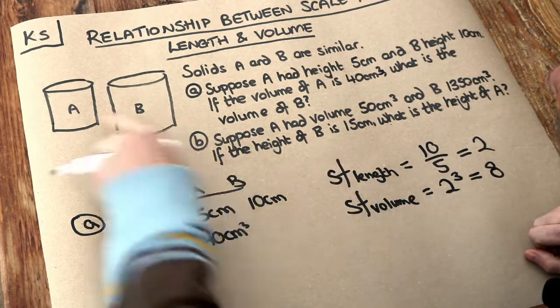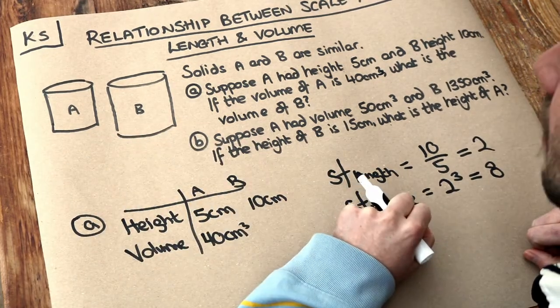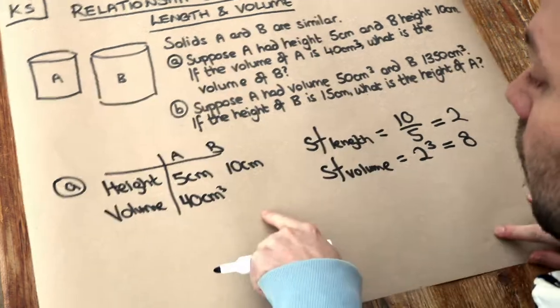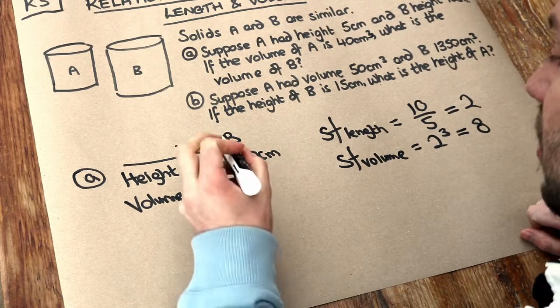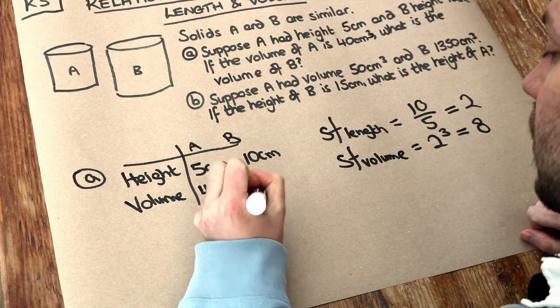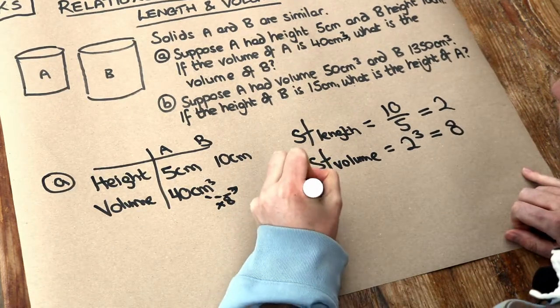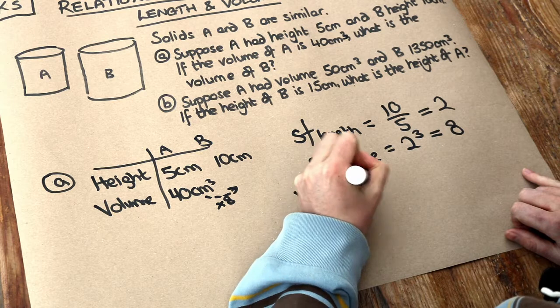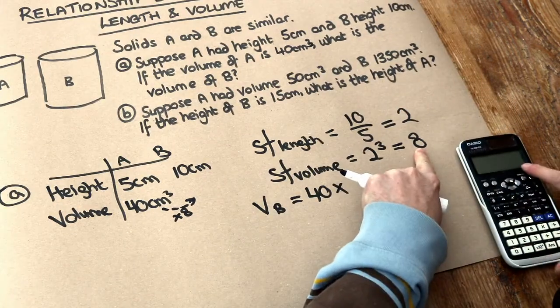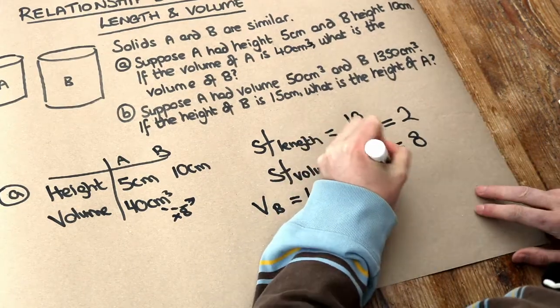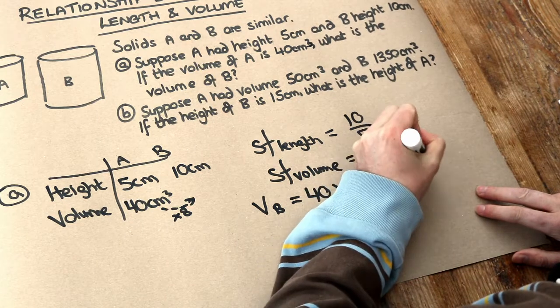So that means going from A to B, the volume is 8 times as big. Well, we've got the volume of A, so we just need to times it by 8 to get the volume of B. So the volume of B is just 40 multiplied by that scale factor of volume of 8, and that's 320 centimetres cubed.